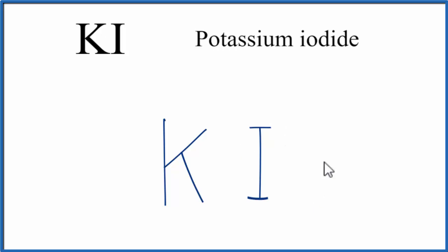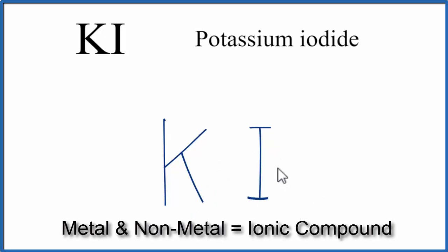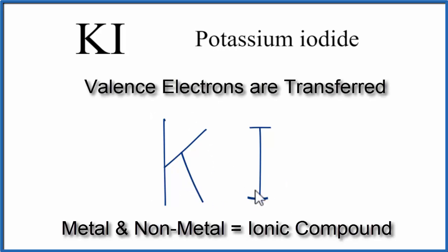Potassium, that's a metal, and iodine is a nonmetal. When we have a metal and a nonmetal, we have an ionic compound, and valence electrons will be transferred from the metal to the nonmetal.